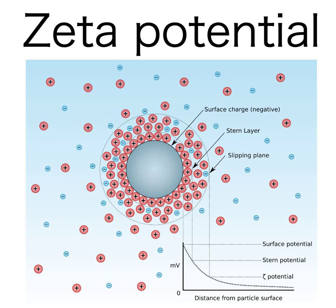Electrophoresis. Electrophoretic mobility is proportional to electrophoretic velocity, which is the measurable parameter. There are several theories that link electrophoretic mobility with zeta potential, briefly described in the article on electrophoresis and in detail in many books on colloid and interface science. There is an IUPAC technical report prepared by a group of world experts on electrokinetic phenomena. From the instrumental viewpoint, there are three different experimental techniques: microelectrophoresis, electrophoretic light scattering, and tunable resistive pulse sensing.